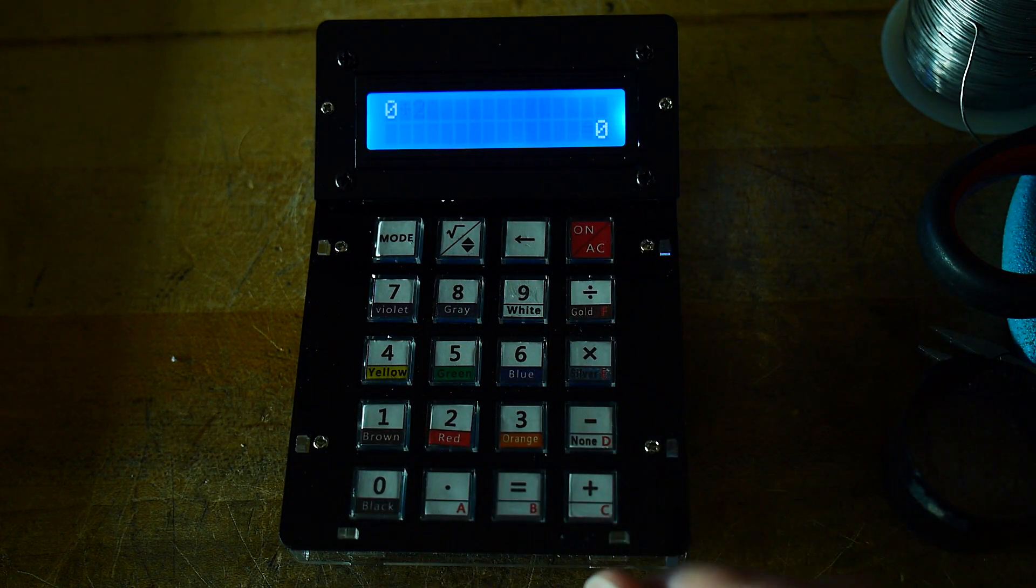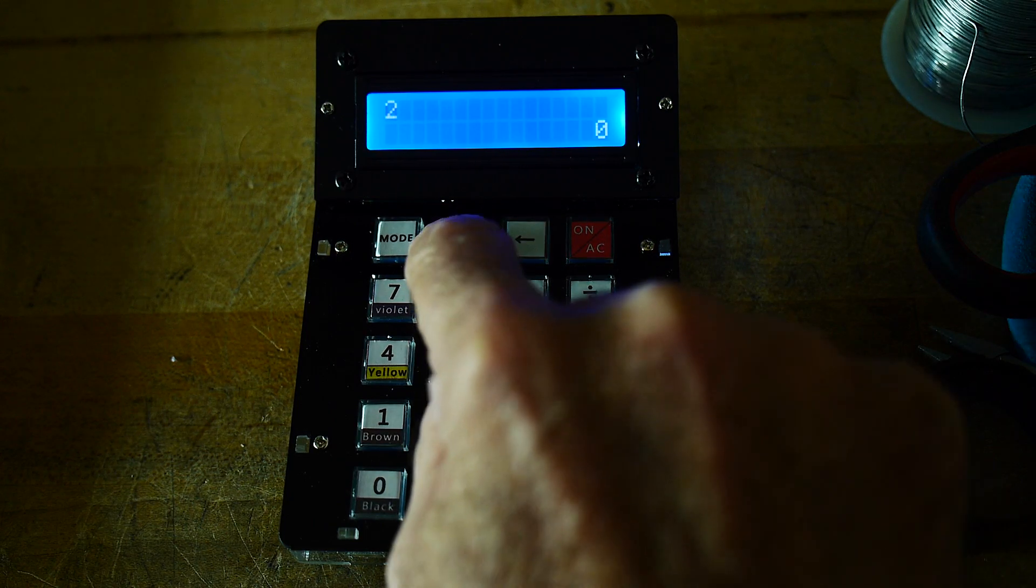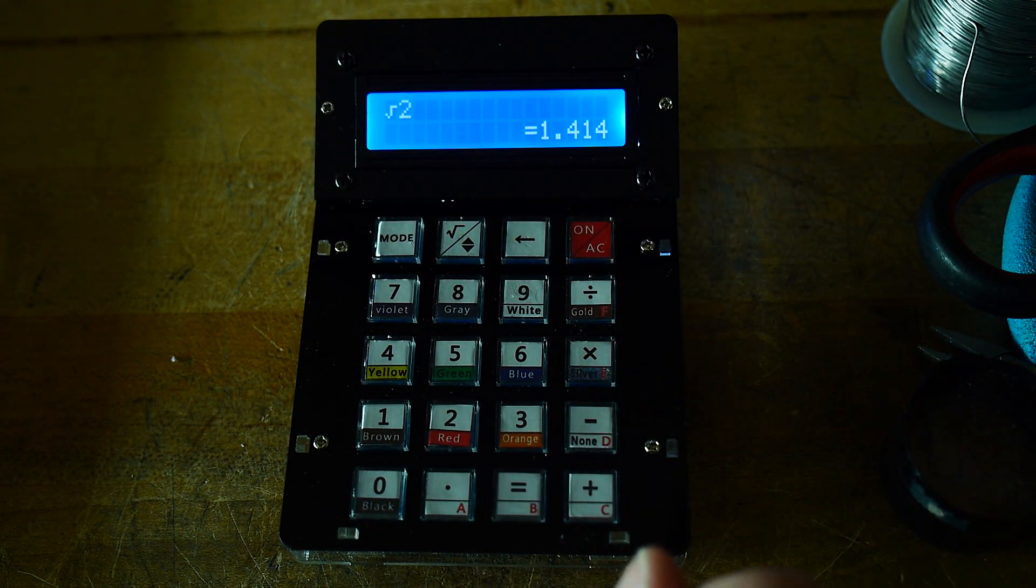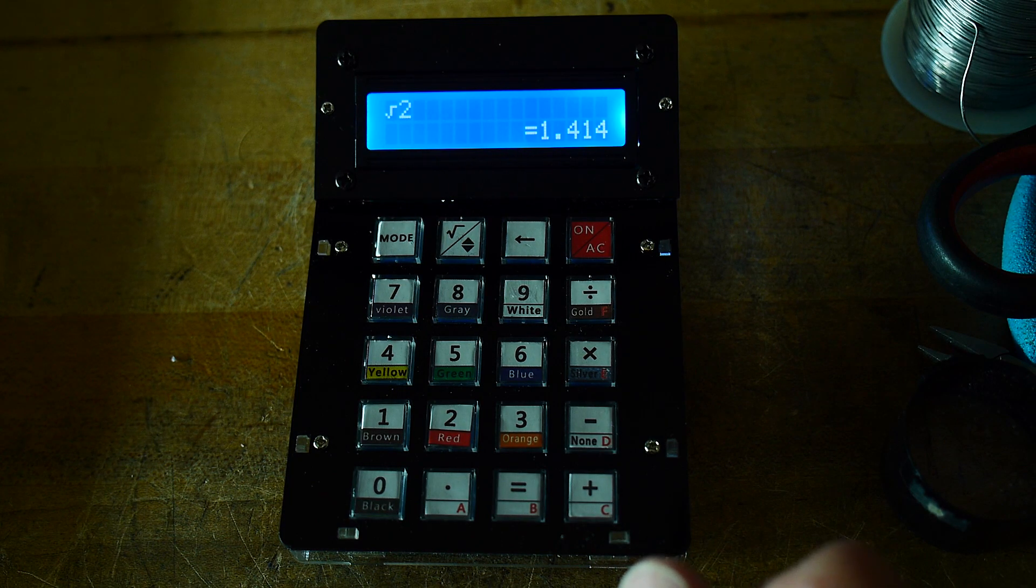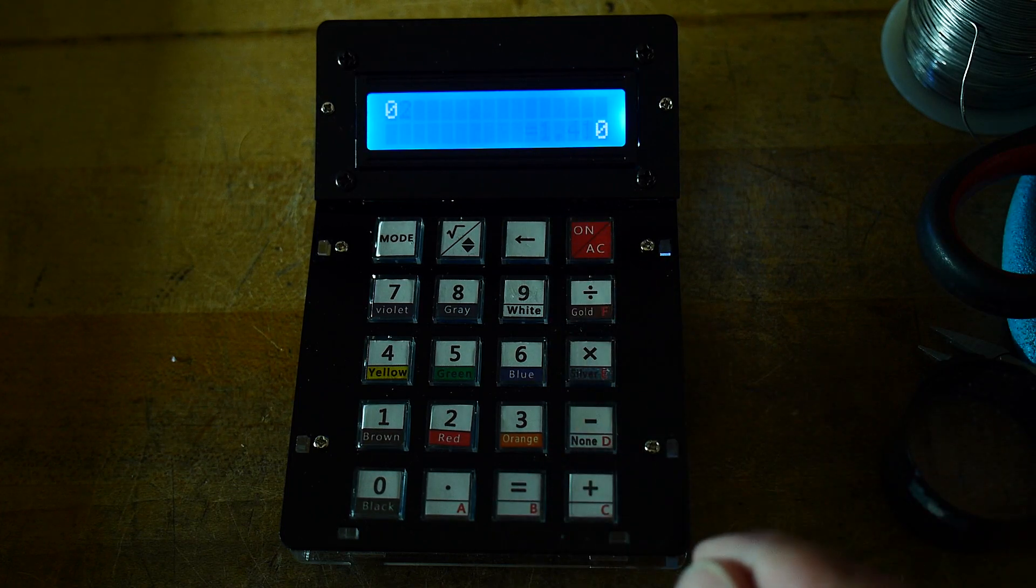If you want to clear it, hit the red button again. If you want to do 2 square root, it gives you a little square root there. You have to hit the equal button and it says 1.4. Okay, that's fine. So let's go on to the fun things. We're going to hit reset.